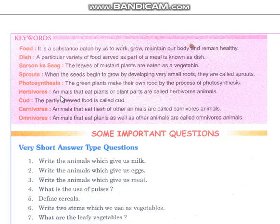Herbivores: animals that eat plants or plant parts are called herbivores — those which eat plants. Cud: the partly chewed food — the food we eat which is not fully chewed — is called cud.